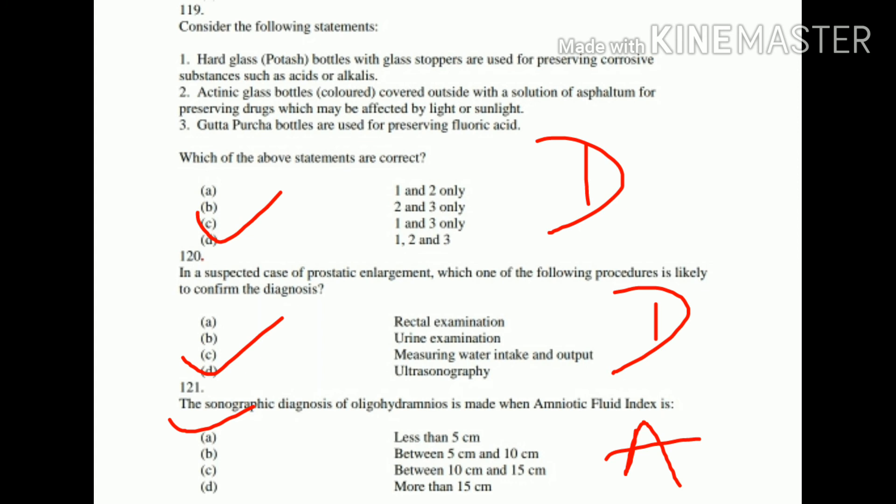Question number 121: The sonographic diagnosis of oligohydramnios is made when the amniotic fluid index is: A. Less than 5 cm, B. Between 5 cm and 10 cm, C. Between 10 cm and 15 cm, D. More than 15 cm. The correct option is A — less than 5 cm.